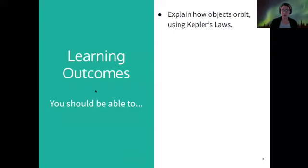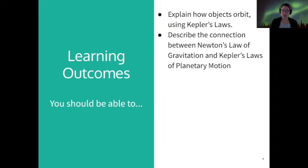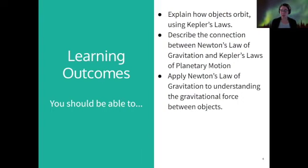So our learning goals today are to explain how objects orbit using Kepler's laws and to describe the connection between Newton's laws of gravitation and Kepler's laws of planetary motion, because the two are deeply connected but they can seem like distinct concepts at first. So we'll try to draw that connection. And then we're going to apply Newton's law of gravitation to understand the force between objects. The reason we're going to focus on this now is because we're going to come back and use Newton's laws of gravitation later in the class when we talk about the planets and specifically their atmospheres.